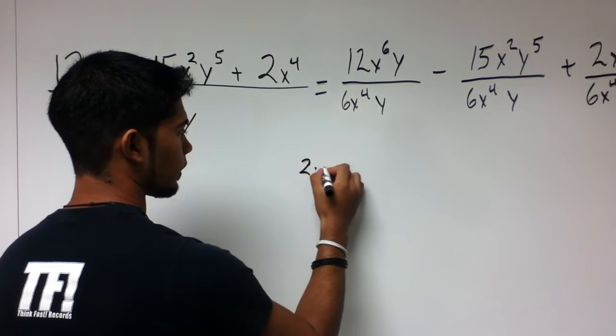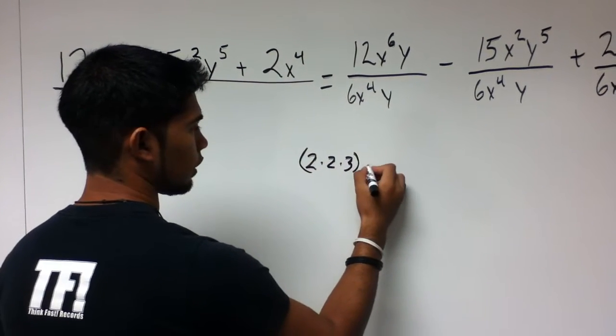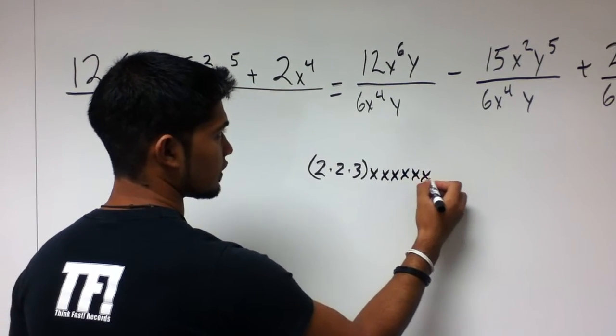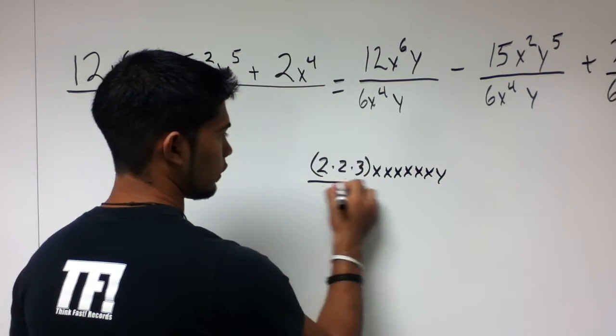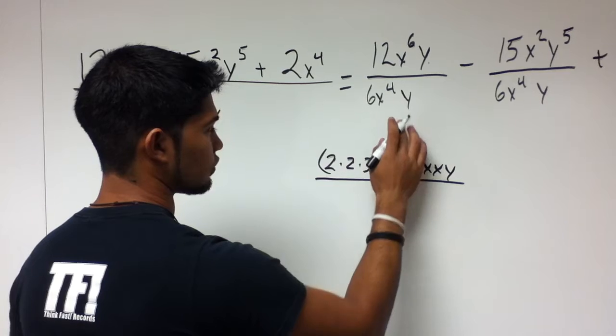12 breaks down to 2, 2, and 3. And now for the x's: 1, 2, 3, 4, 5, 6, and a y. Now this part of the equation is completely broken down right here. We're going to do the same to the bottom.